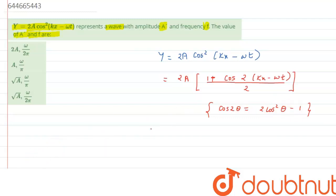Therefore, if we solve further, so we will get the value as y equals to, this 2, 2 will get cancelled out and we are left with a plus a cos of 2 kx minus 2 omega t.